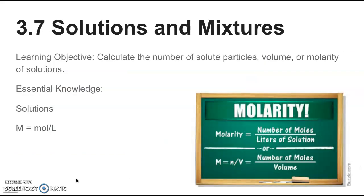3.7 is on solutions and mixtures. The learning objective here is to calculate the number of solute particles, volume, or molarity of solutions. It's about molarity. Molarity — the equation is right here and it's on your equation sheet. Molarity is equal to moles of solute per liter of solution, and you want to be able to solve for any one of these variables.